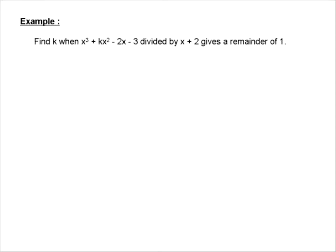The next one, we're going to be given the remainder. So we're told now that we're going to find k when x cubed plus kx squared minus 2x minus 3 is divided by x plus 2 gives us a remainder of 1.